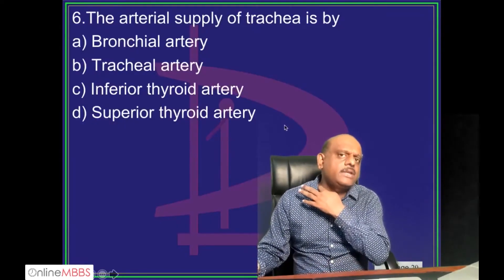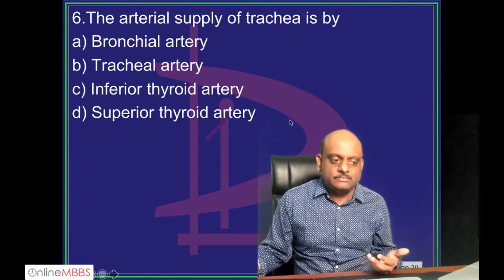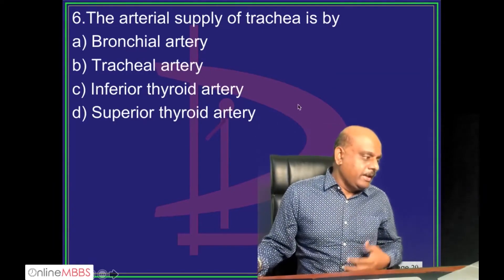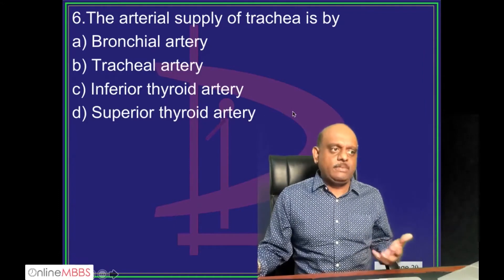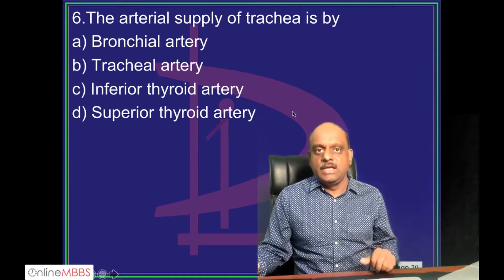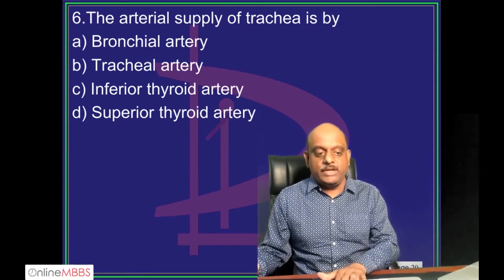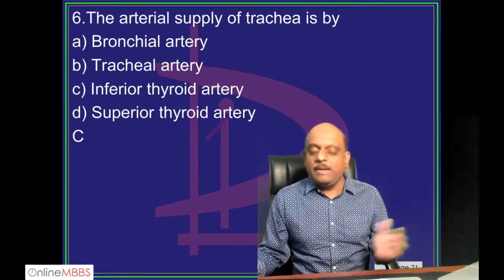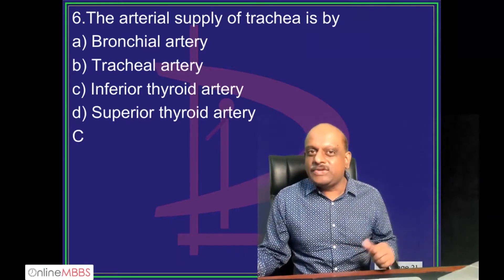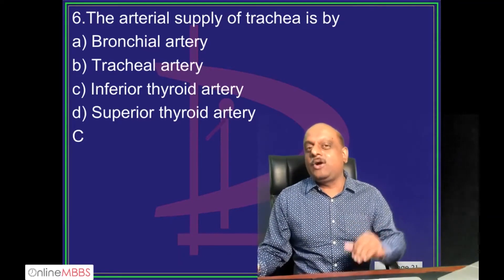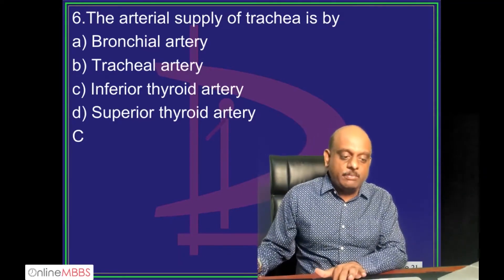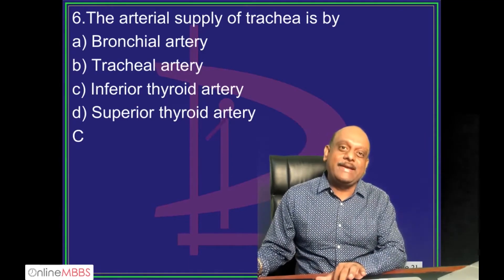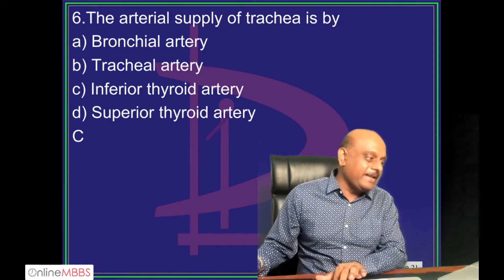What is the arterial supply of the trachea? Very important question. From an anesthetist's perspective, some of you are going to be anesthetists, so from an anesthesia perspective also it is very, very important. For MD entrance or MDS entrance, this is a common question. You should remember it is the inferior thyroid artery which is the main supply.